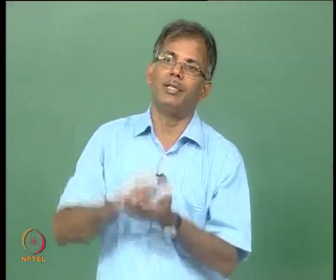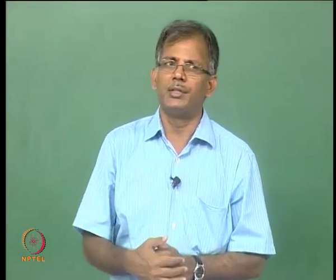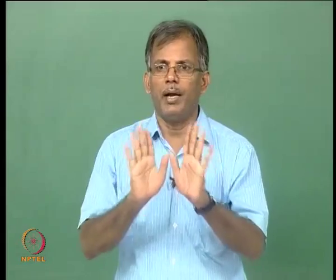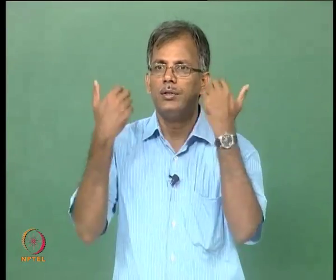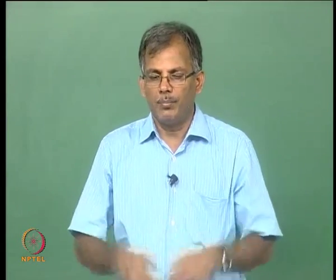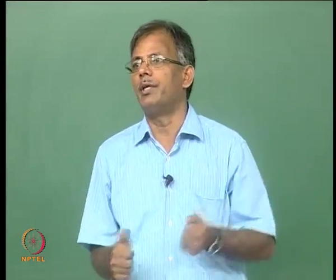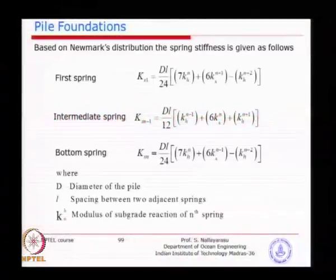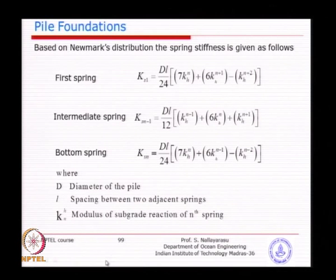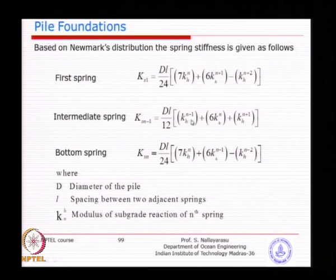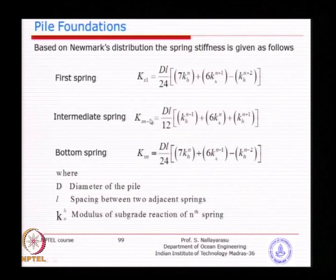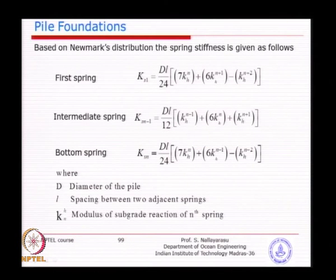The intermediate spring has more strength than the starting and ending spring, as seen from the denominator of 24. The middle spring has D as diameter and L as the segment length. What is done is dividing the whole pile into several sub-segments - for example, if the total embedded length is 100 meters, divide it into 1-meter segments. You do a weighted average of the stiffness of the previous and next segment.